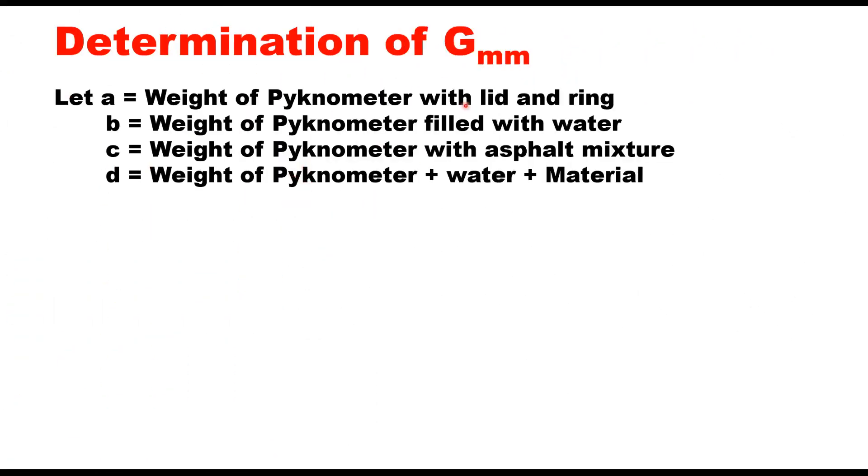To determine the theoretical maximum density, let us assume that small a is the weight of pycnometer with its cover and ring. B is the weight of pycnometer when it is filled with water. C is the weight of pycnometer with asphalt mixture, and D is the weight of pycnometer plus water plus material. Then this GMM will be given by this equation: C minus A—this is the weight of the asphalt mixture—upon B minus A minus D minus C. That is the total volume of the water displaced by the sample.